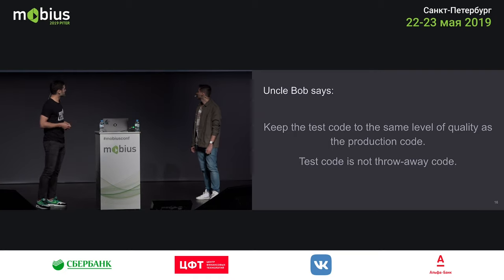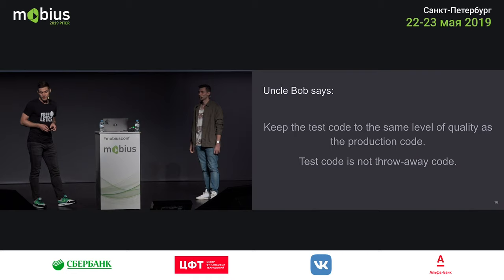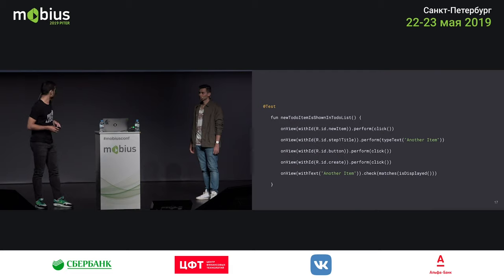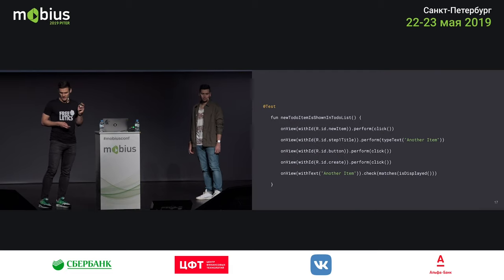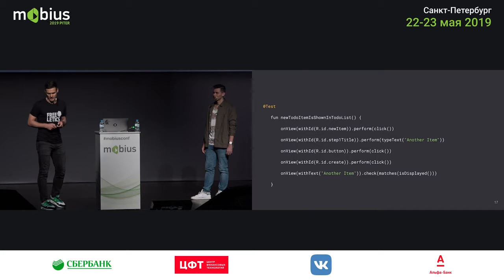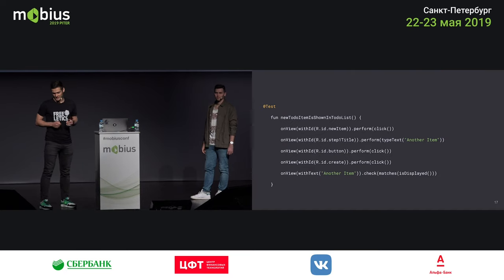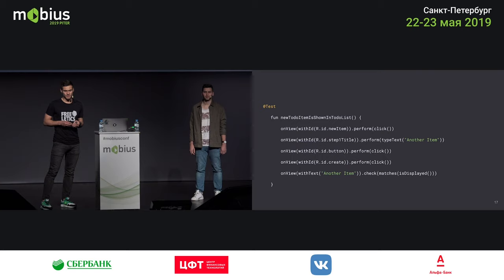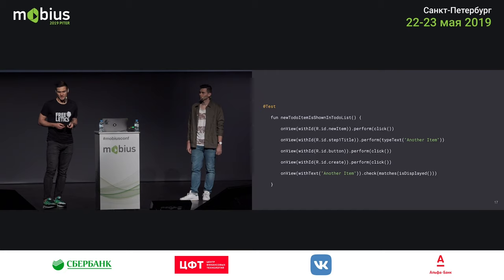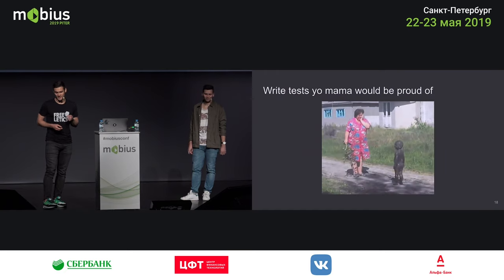Uncle Bob once said that you should keep the test code at the same level of quality as production code — test code is not throwaway code. How often have you written something like an Espresso test and been proud of it at first, only for it to turn into a horror show? Maintaining it after a year was virtually impossible — every ID change broke everything. So if there is one takeaway from this presentation, it would be: write your tests so your mama will be proud.